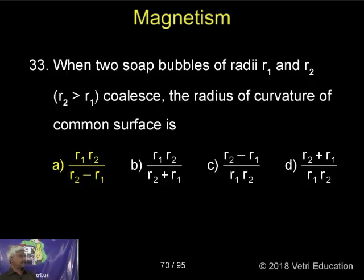The radius of curvature of the common surface is r1*r2 divided by r2 minus r1. This is the result I have given in the theory.